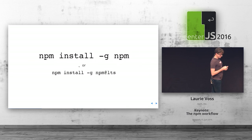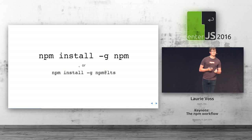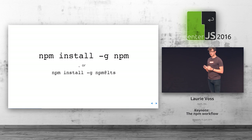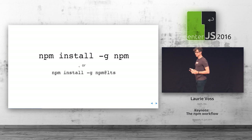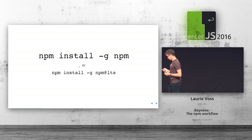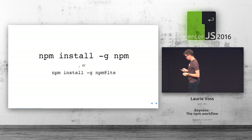But one thing before we get started: you should update your copy of NPM. NPM is updated nearly every single week, and it's currently in version 3, and yet the majority of people are running version 2. You can run the first command to get the latest version of NPM 3, or the second command to get the latest version of NPM 2, and either will be much better than what you're probably running right now.